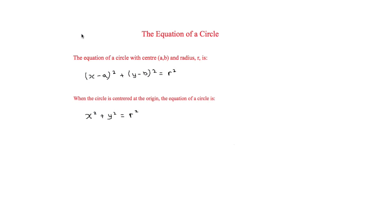This is I'm Stark and in this video we will be looking at the equation of a circle. The equation of a circle is x minus a squared plus y minus b squared is equal to r squared. The only time this changes is when the circle is centred at the origin, where the centre is (0, 0), and the equation becomes x squared plus y squared equals r squared.